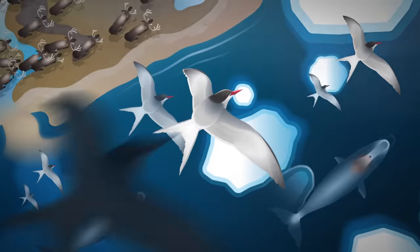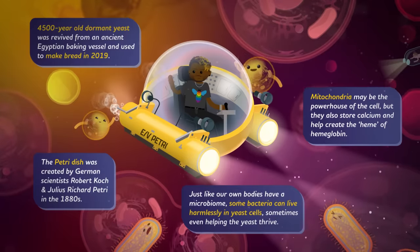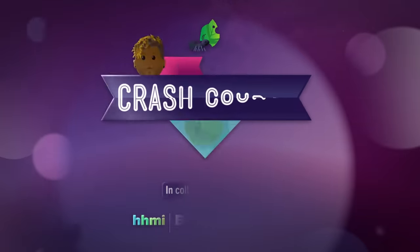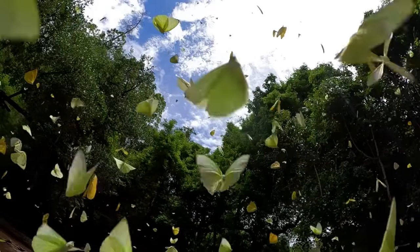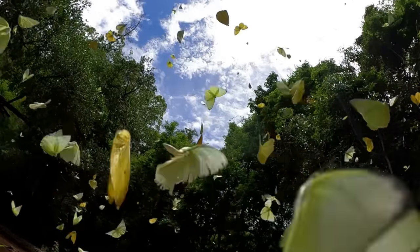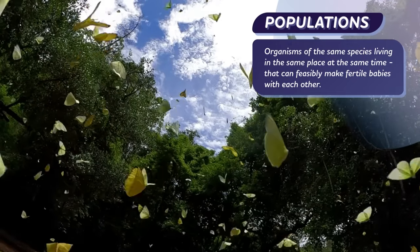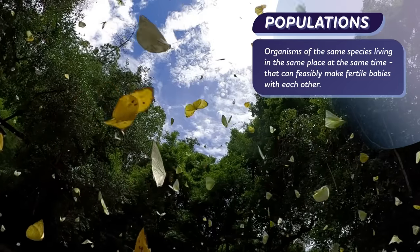I wonder if my doppelganger loves funky theme music. Population genetics, like my doppelganger said, is the corner of biology focused on the genetic makeup of populations — organisms of the same species, living in the same place, at the same time, that can feasibly make fertile babies with each other.